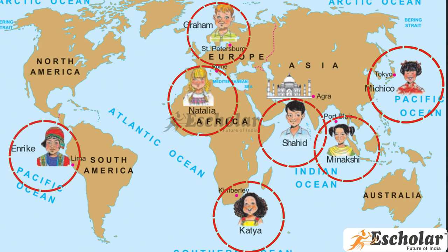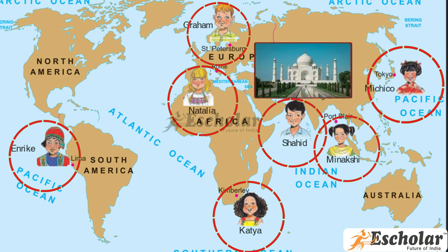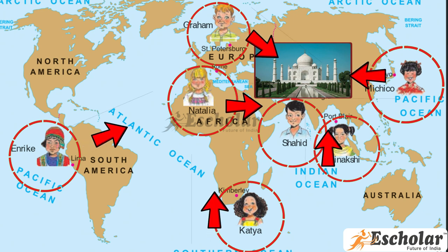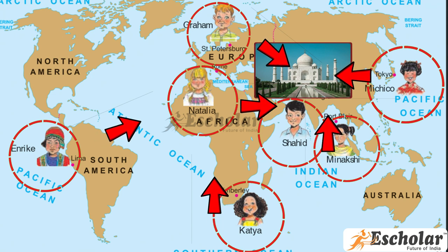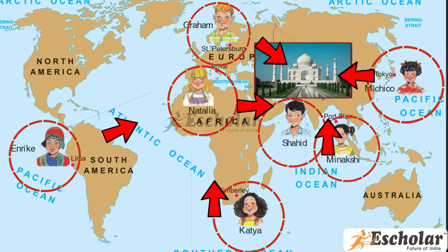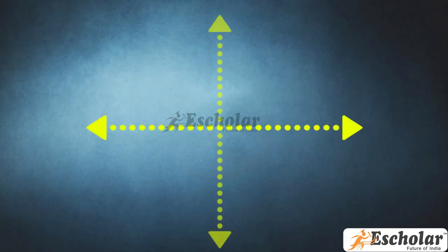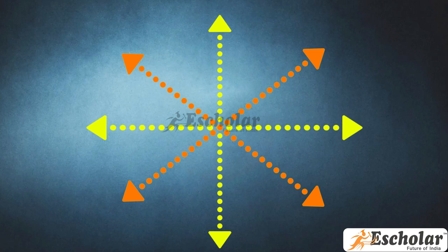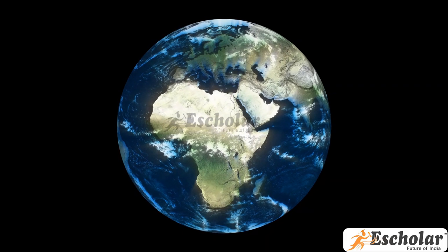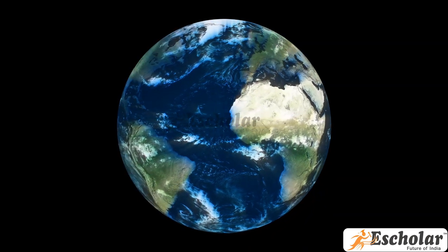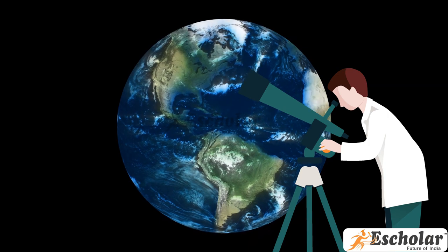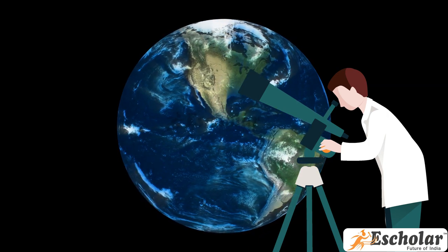Shahid and Enrique have answered the above questions differently using directions and sub-directions. The Taj Mahal is located at one and the same place — that is Agra — however when each of the children told the direction from their respective places, their answers were different. This means that the use of directions alone does not help us to accurately describe the location of a place. That is why it became necessary to find a new system to state the precise location of any place on the earth.